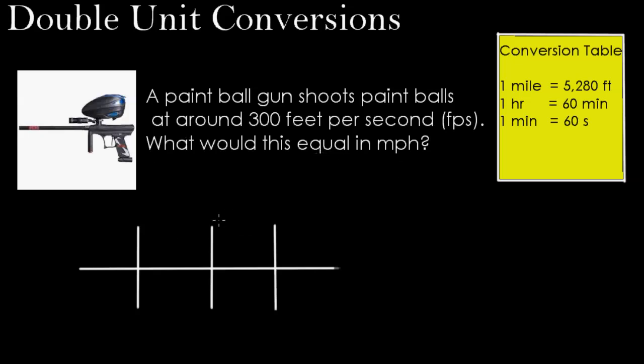When we're looking at this problem, we have to be able to not only convert a distance unit, but also a time unit. Remember that feet per second, per, is just another way to think of a division problem. It's feet over seconds. So it's going to be 300 feet over one second. That's how fast that paintball is moving - 300 feet every second.